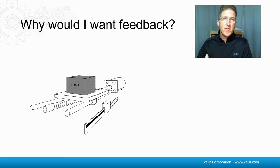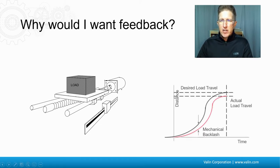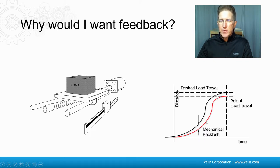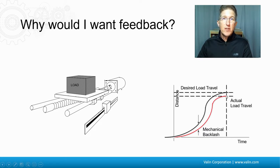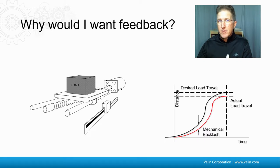Maybe you want to compensate for mechanical backlash. If you look at this chart, distance is on the Y axis and time is on the X. If you're expecting the black line — expecting to get to a certain distance — but because of mechanical backlash it lags a little bit and never quite gets there, with feedback you could go a little further and pick up that slack. You could tell if your coupler was broken. You could take a rolled ball screw and make it more precise instead of needing a ground ball screw — though you'd have to consider whether the cost is worth it.